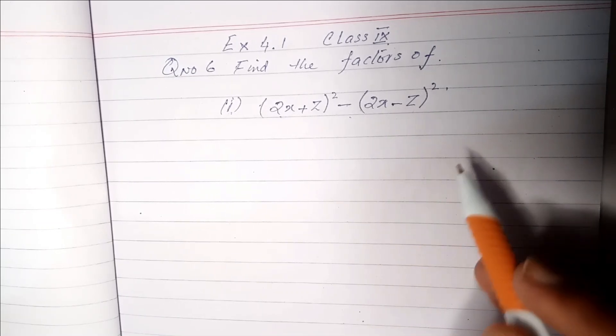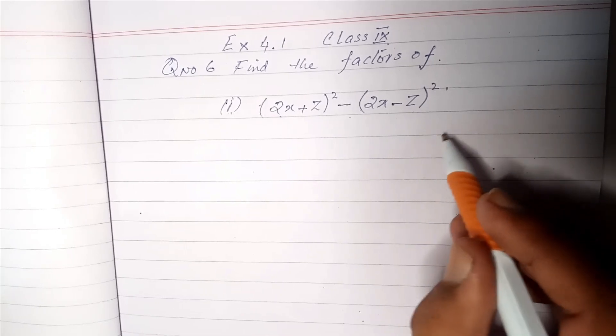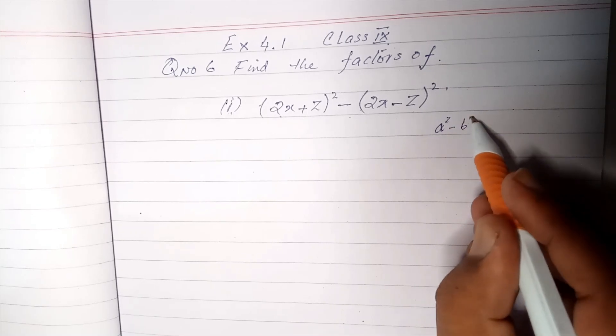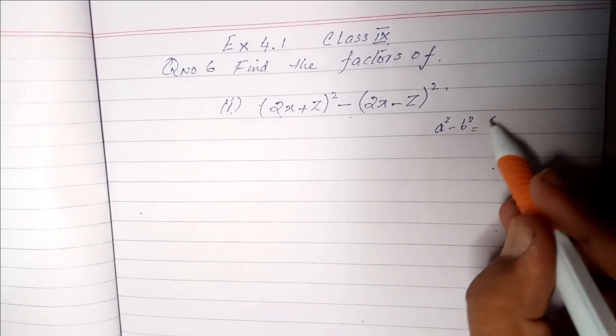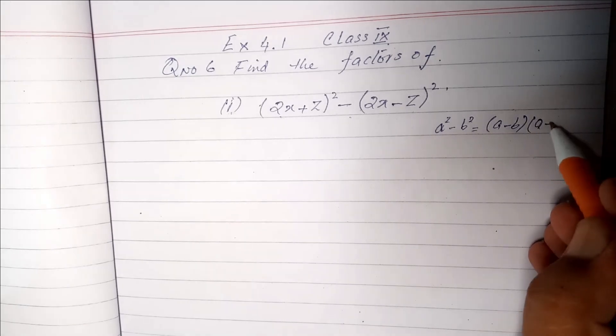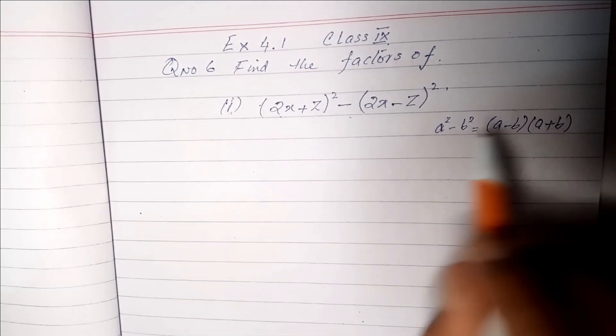First of all, we will see a formula. We have already studied this formula: a² - b² = (a-b)(a+b).